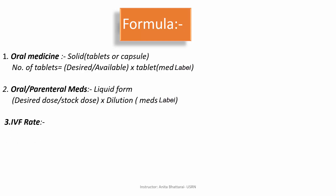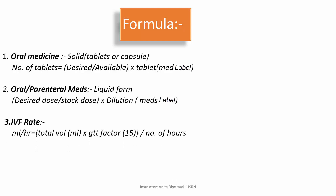Next we have IV flow rate. To calculate ml per hour, the formula is: total volume in ml multiplied by the drop factor (gtt factor), divided by the number of hours — which should be in minutes. For gtt per minute, the formula is: volume in cc multiplied by gtt factor, divided by the number of hours — and to convert hours into minutes, we multiply by 60.